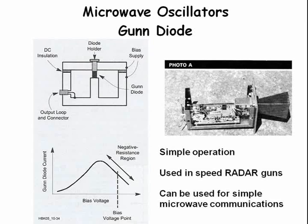A Gunn diode oscillator also uses a resonant cavity to control the frequency of the generated signal; an amplifier is placed within the cavity. These devices are capable of operating at very high frequencies and were used more heavily before microwave transistors were developed.